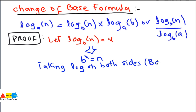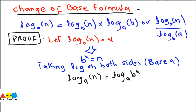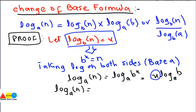Taking log base a on both sides: log_a(n) = log_a(b^x). By the power law, this becomes x · log_a(b). Substituting back x = log_b(n), we get log_a(n) = log_b(n) · log_a(b). This is equation one.